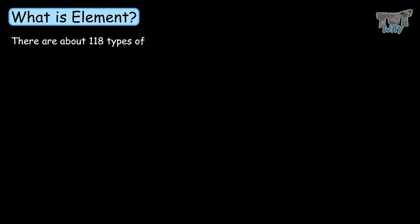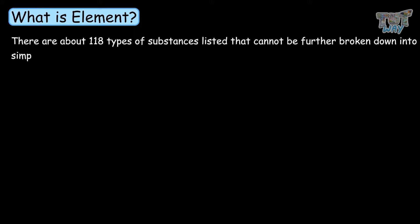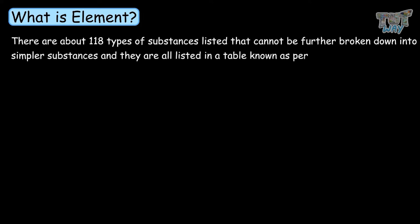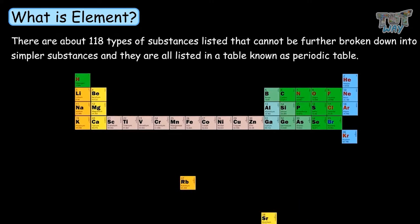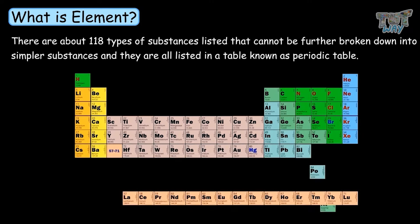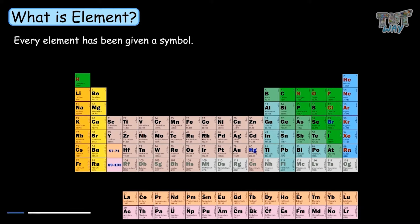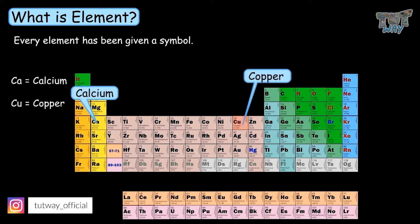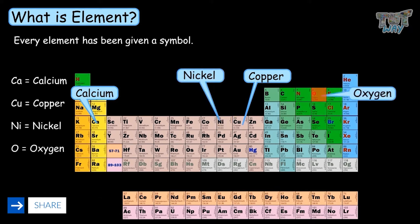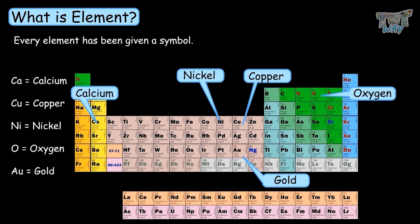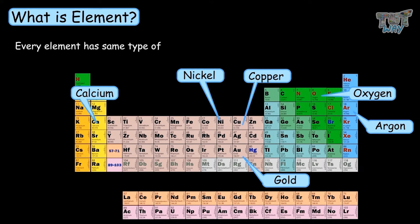Now let's focus on what is an element. There are 118 types of substances that cannot be further broken down into simpler substances, and they are all listed in a table known as the periodic table as 118 types of different elements. This is the periodic table, and all 118 types of elements are distinct types of matter listed in this table. And every element has the same type of atoms only.